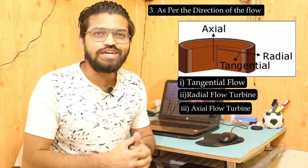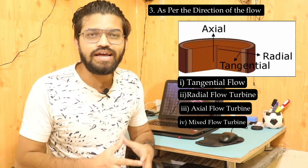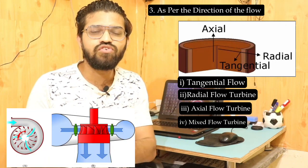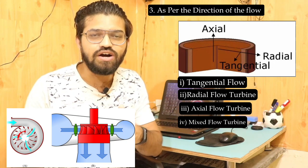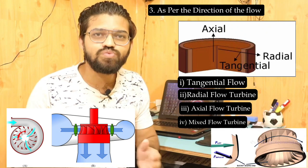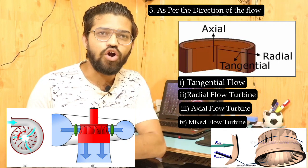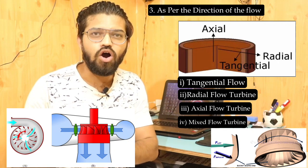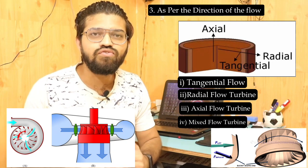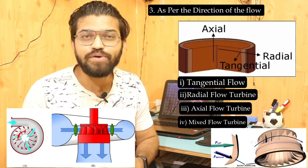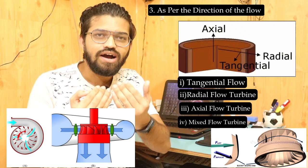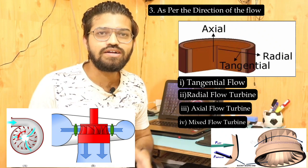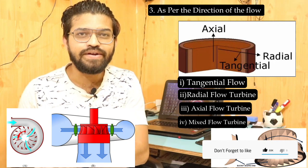The last flow type is the mixed flow turbine. The Francis turbine is a mixed flow type turbine — the water enters radially and leaves axially. The airfoil arrangement in the Francis turbine is such that water exerts pressure on the turbine blades, a lift force is generated, and due to that lift force the Francis turbine rotates while water leaves axially. So this is the mixed flow type of turbine.